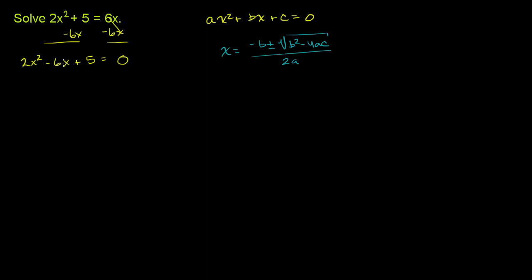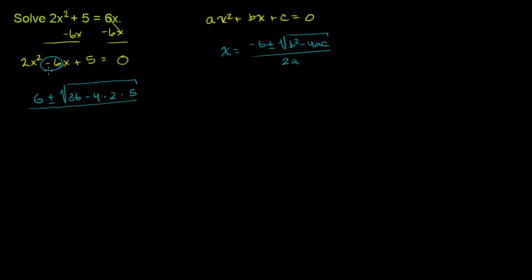Negative b — b is negative 6 — so negative b is positive 6. Plus or minus the square root of b squared: negative 6 squared is 36, minus 4 times a, which is 2, times c, which is 5. All of that over 2 times a, which is 2, so 2 times 2 is 4.